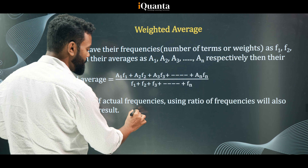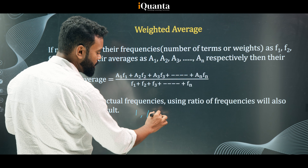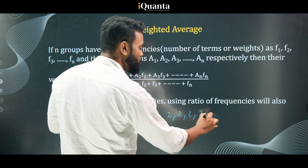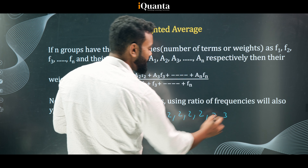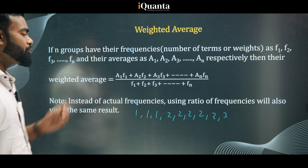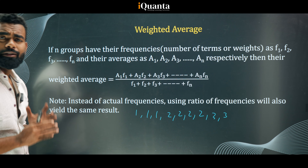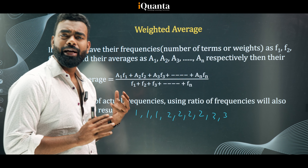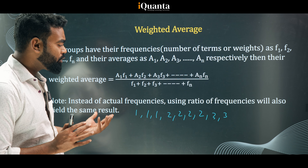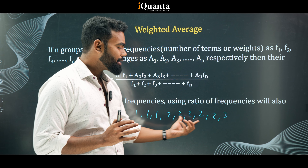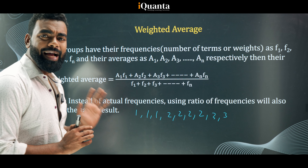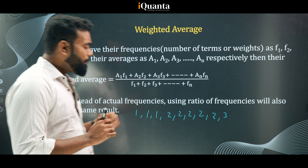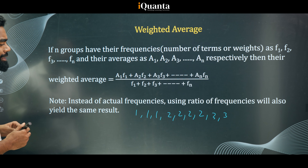Consider the numbers: 1, 1, 1, 2, 2, 2, 2, 3, 3. If I ask you to find the average, one way is to simply add all of these and divide by the number of observations, which is nine. So you add nine things and divide by nine to get the average. But this can also be represented another way.